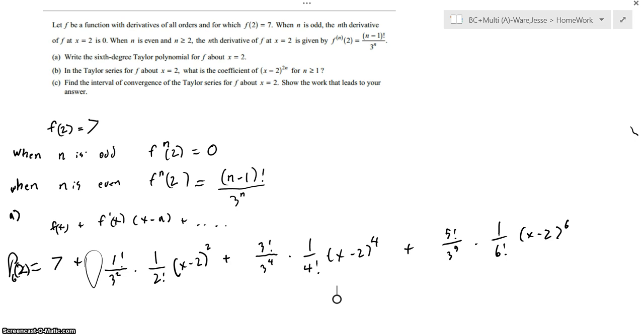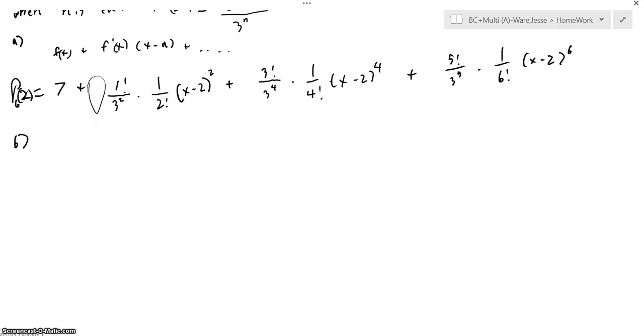Now, moving on to part B, it asks in the Taylor series for f about x equals 2, what is the coefficient of the x minus 2 to the 2n. So, it basically is asking what's the general form for all the coefficients of the even degrees. So, what we're going to construct is a general form. The general form can be taken using the original function for the even terms and substituting 2n every time there is an n, because this would make it so obviously every single one would be even.